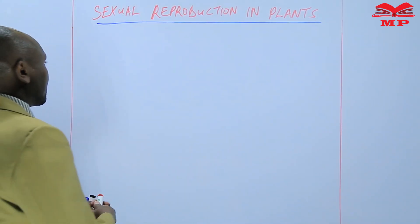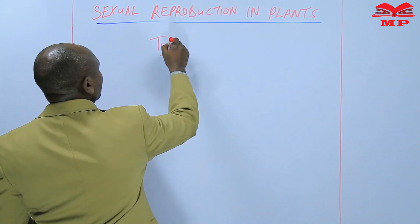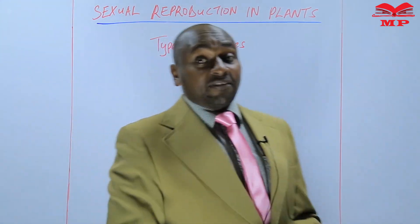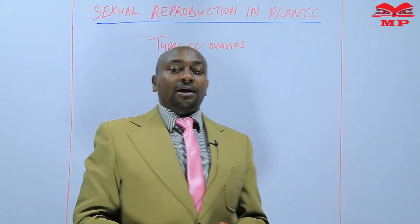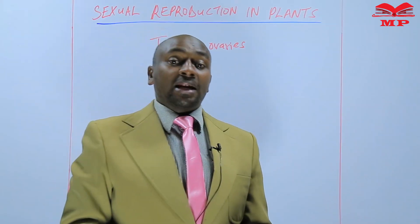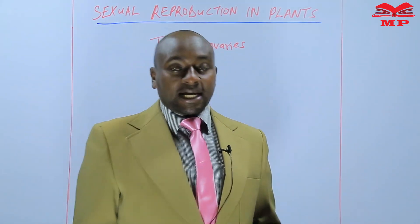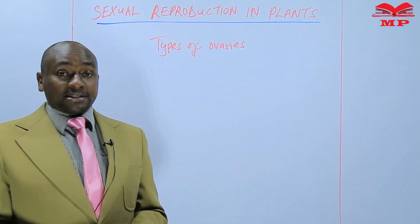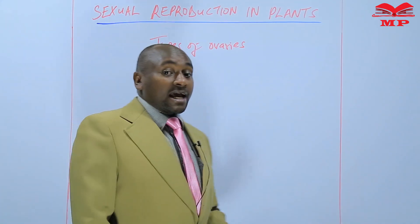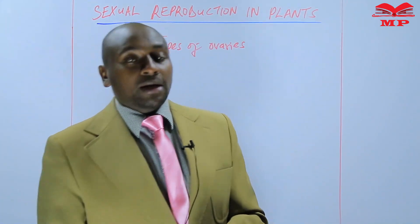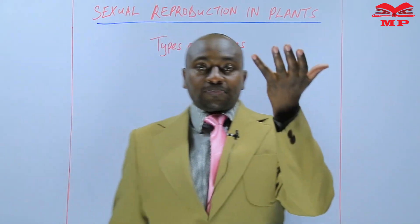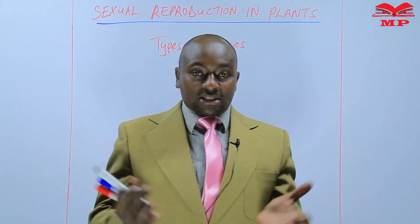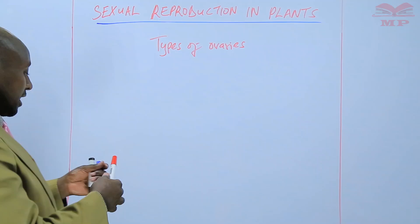Today I want us to look at types of ovaries. We're going to study the types of ovaries in a flower. The ovaries are the ones that bear the female gametes, and those female gametes are the ones that will be later used for fertilization. These types of ovaries are given according to their position. We have some ovaries that form above the receptacle, others that form deep in the receptacle, and others that form surrounded by the receptacle. Basically, we are going to have three types of ovaries.